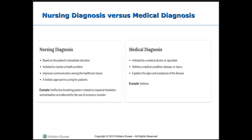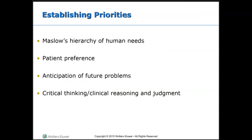Prior to establishing priorities, we start with Maslow's hierarchy of needs, patient preferences, anticipation of potential future problems, and two of our threshold concepts: critical thinking and clinical reasoning in nursing. These are key components of what we do as nurses and help us establish our priorities and put them in order of importance. Identifying potential diagnoses is step one.